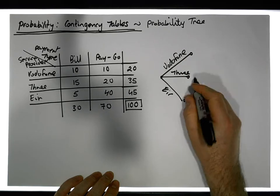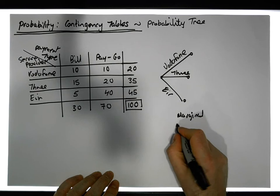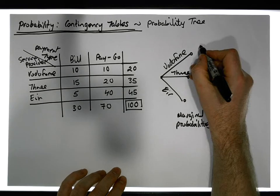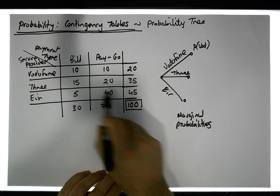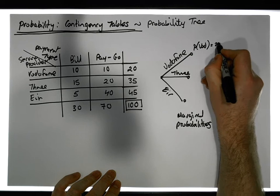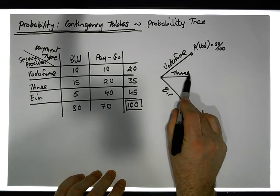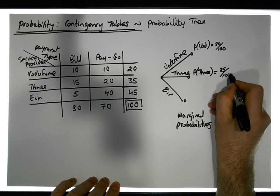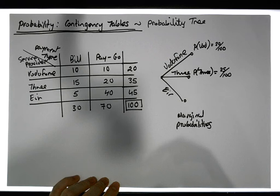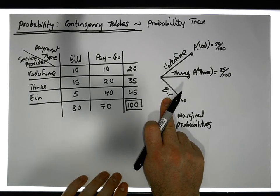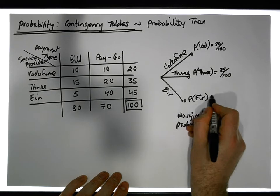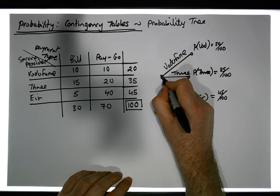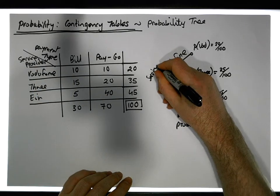Along these first branches we calculate our marginal probabilities — the simple probabilities. The probability that you're a Vodafone customer: there are 20 Vodafone customers out of 100, so that probability is 20/100. The probability that you're a Three customer: there are 35 out of 100. The probability that you're an Eir customer: if selected at random from the 100 people, there are 45 Eir customers out of 100.